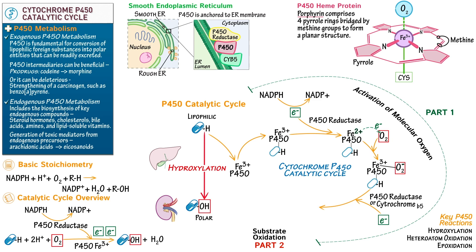Subsequently, two proton ions bind to the enzyme complex and perform a heterolytic dioxygen bond cleavage, which allows the protons to bind with one of the oxygen atoms; in the process, water is formed and released. This step forms the most reactive intermediate in the cycle — a ferryl intermediate with a double bond to oxygen, in its 5-plus oxidation state, two steps above the ferric iron state.